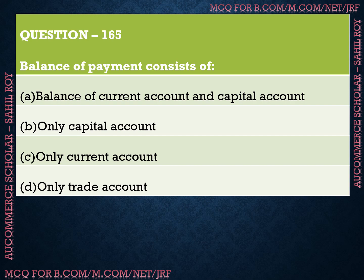Question number 165: Balance of payment consists of? We have four options: Option A is balance of current account and capital account, Option B is only capital account, Option C is only current account, and Option D is only trade account. The correct answer is Option A — balance of payment consists of balance of current account and capital account.